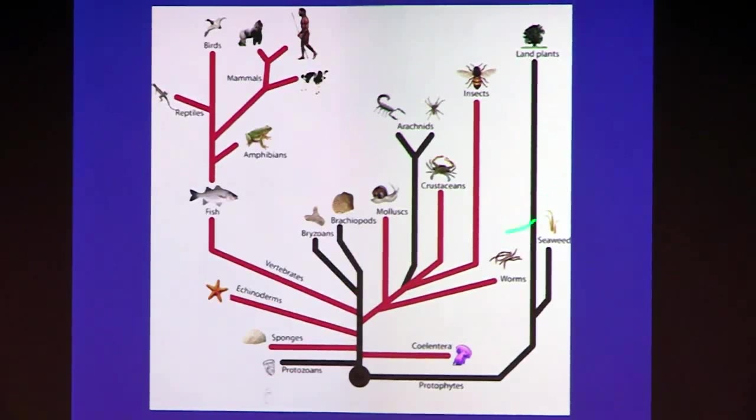So we think that this situation obtains through this part of the tree of life. We're not sure yet about land plants, but it does not obtain in unicellular life where they pay different amounts of energy to make their ATP depending on their physiological circumstances.